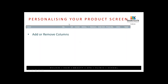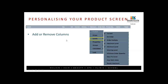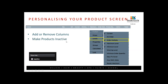Now let's look at personalizing your product screen. Within Shortcuts you can choose exactly what columns you do and don't see. To add or remove columns, right-click on the bar at the top of your stock screen, and you'll get a dropdown. Anything that's ticked is showing; if you don't want it to show, tick it again to untick. You can also make products inactive using the inactive tick against each product, then use 'Show me inactive' to bring a product back.